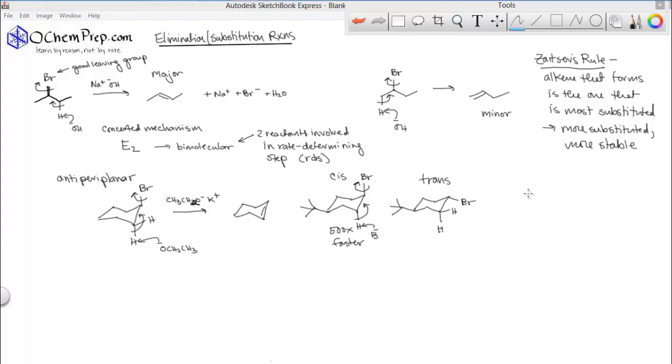So, this elimination reaction works best with secondary and tertiary alkyl halides. And you need an alkyl halide and you need a strong base. And the strong base that you will see mostly in your textbooks is probably the sodium ethoxide or potassium ethoxide. And sometimes you will see NaOH. Realize the Na+ and the K+ are spectators.